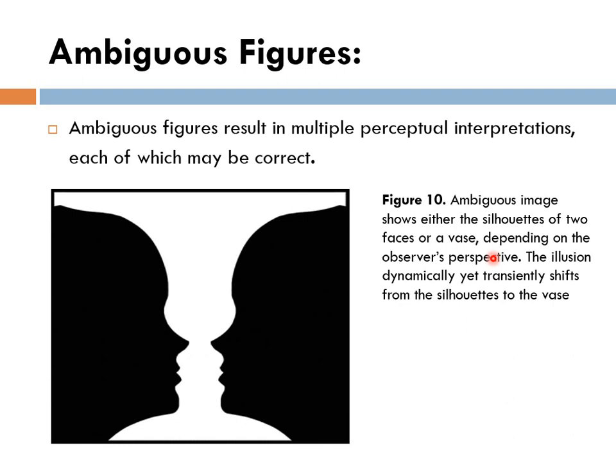We have illusions of perception of many types — like ambiguous figures. Ambiguous figures lead to multiple perceptual interpretations, each of which may be correct. For example, this image: if we see the white area as the background, we see two faces in the foreground. If we see the two faces as the foreground, we see there is a vase in the background.